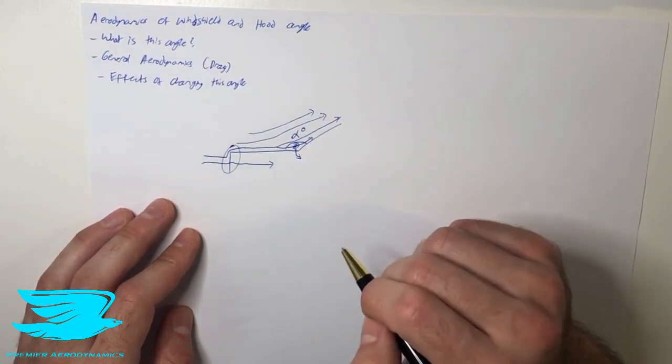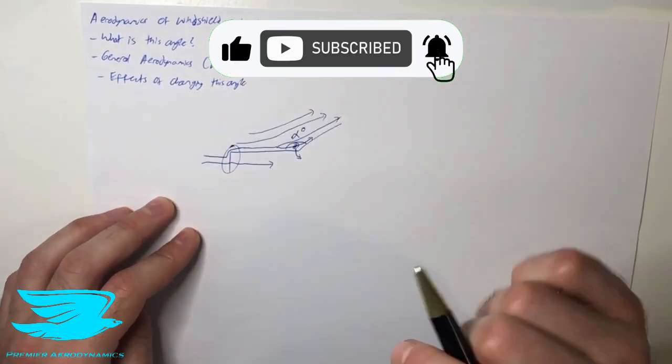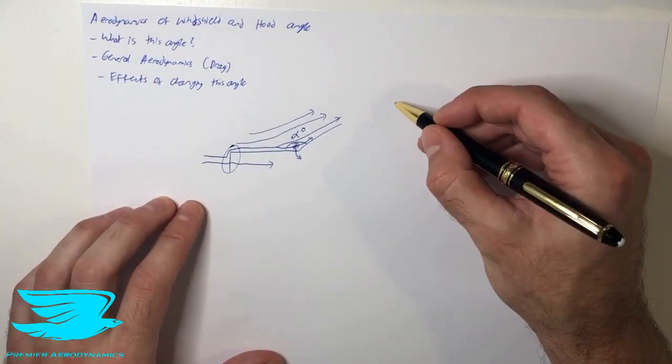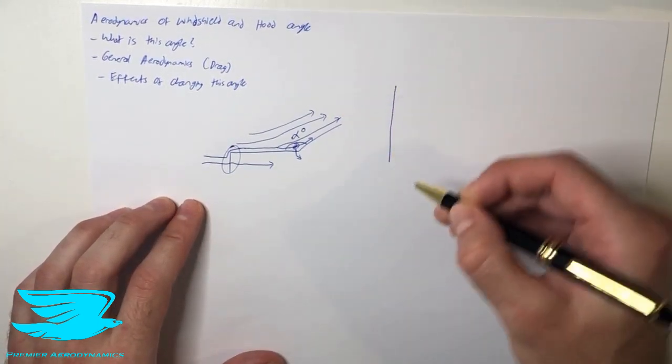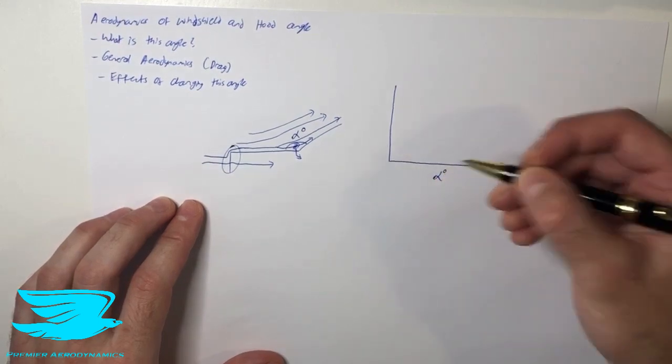So how does this angle affect the amount of drag here? Well again, it does affect the drag quite a bit but not nearly as much as what we might think. If we were to plot the alpha angle here and we have the drag coefficient on this axis and we go anywhere from 0 to 180, let's say, so it goes from being like the entire range.